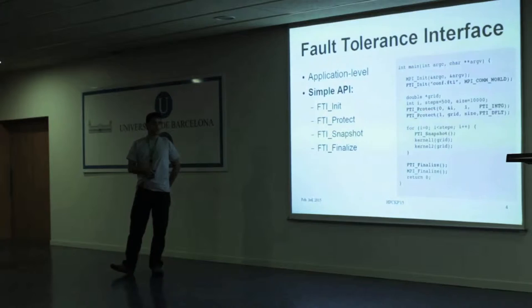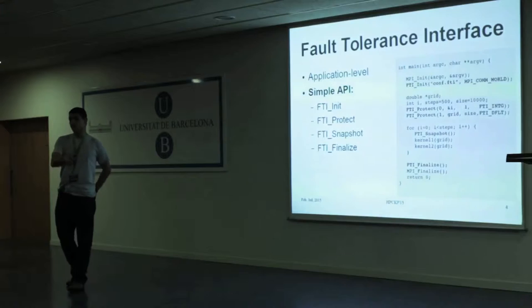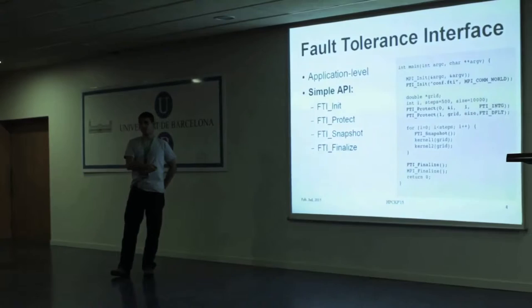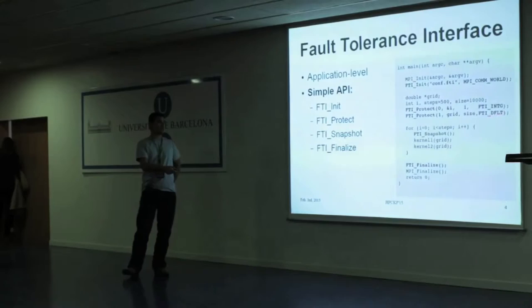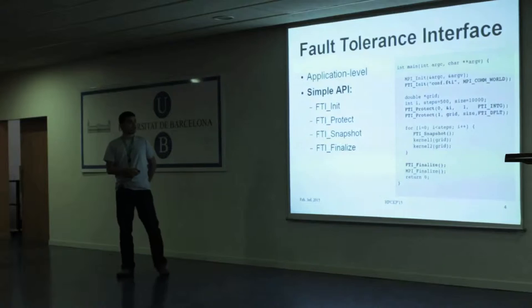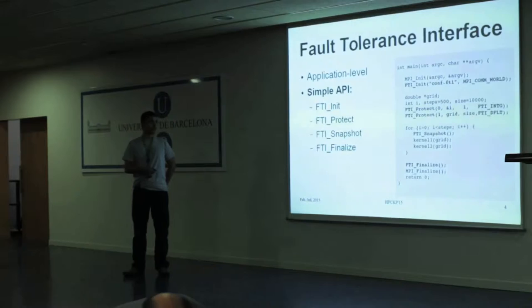Protect is a function where you say to the library — to FTI — this is the dataset that I want to protect when you do a checkpoint. You give it just an ID, a pointer, the size of the dataset — so if you have a 2D or 3D array you give the size here — and the type of the dataset, whether it's a floating point, double, integer, or whatever. FTI would register all these datasets that you want to protect in order to be able to restart.